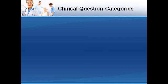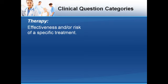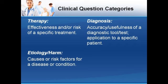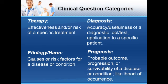Let's consider the most common clinical question types — this is the silent T in PICO. When searching the literature, it's important to know what kind of clinical question you are trying to answer. Typically, your question will fall into one of four categories. A therapy question involves information on the effectiveness and/or risk associated with a specific treatment. A diagnosis question is concerned with the accuracy of a diagnostic tool or test. Etiology and harm questions ask about the causes or risk factors associated with a disease or condition. Finally, prognosis questions involve information about the probable outcome, progression, or survivability of a disease or condition and the likelihood that it will occur.